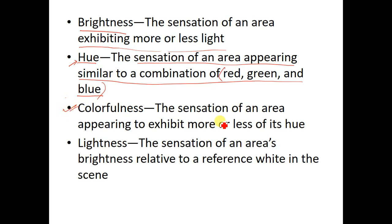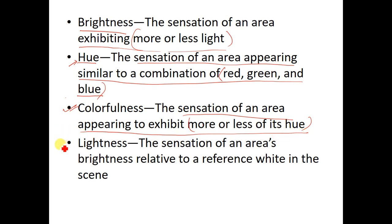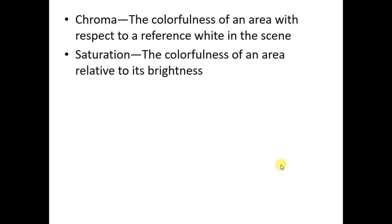Then we have colorfulness — the sensation of an area appearing to exhibit more or less of its hue. Brightness is more or less of light; colorfulness is more or less of its hue. Then lightness is the sensation of an area's brightness relative to a reference white in the area. Then chroma is the colorfulness of an area with respect to a reference white in the scene. You have to remember all these terminologies when talking about color inspection. Lastly, we have saturation — the colorfulness of an area relative to its brightness.